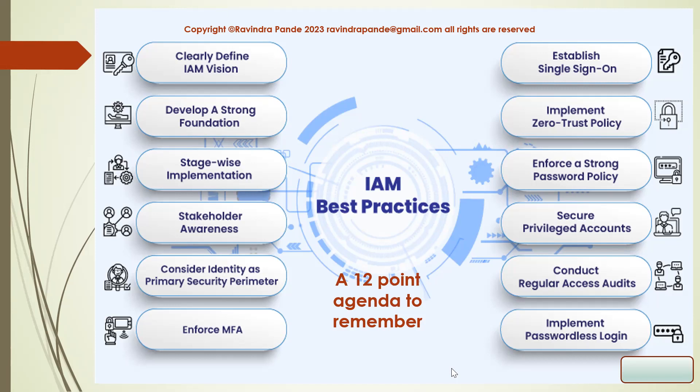There could be some exceptions as well — like an accounts executive might need to visit the software division to explain a new HR policy or savings scheme. We need to make sure all these privileges are secure and according to the hierarchy and strategies built for identity and access management solutions. We also enforce a strong password policy so that nobody can use others' passwords and gain unauthorized access.